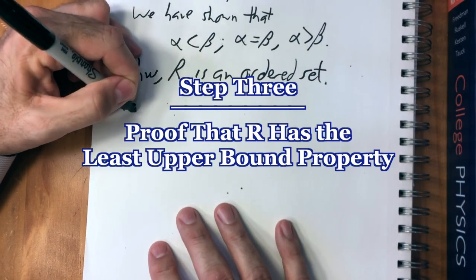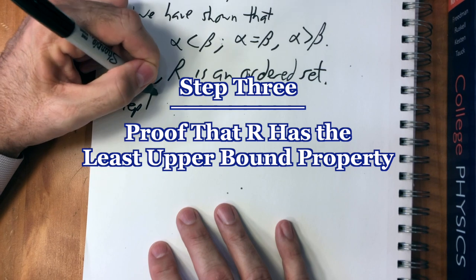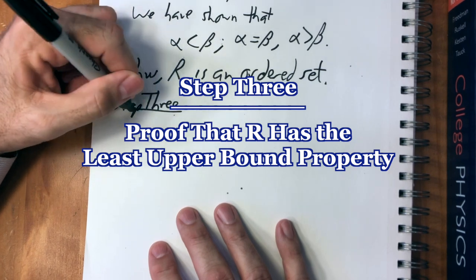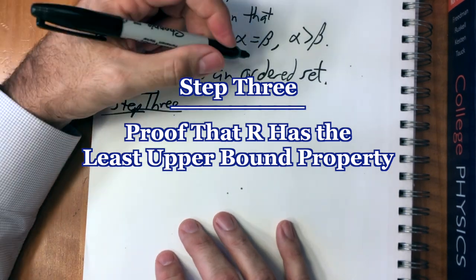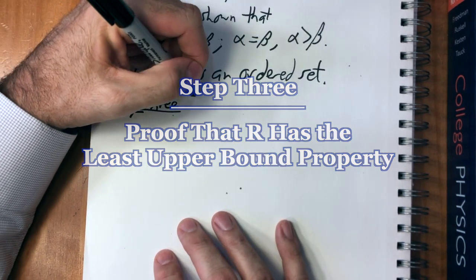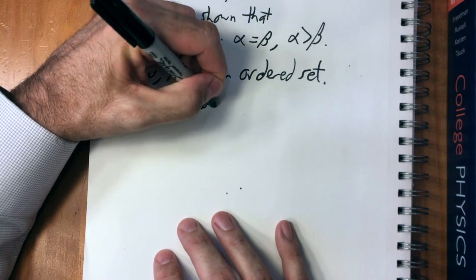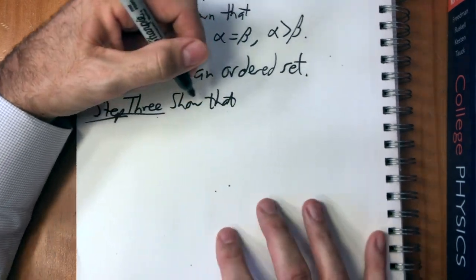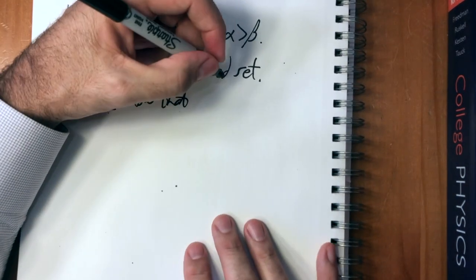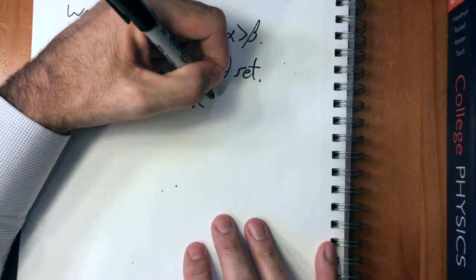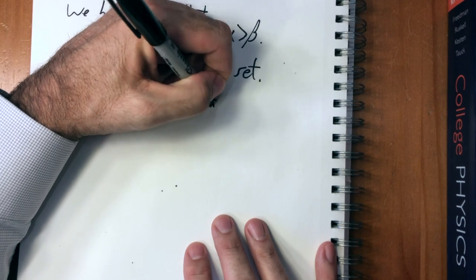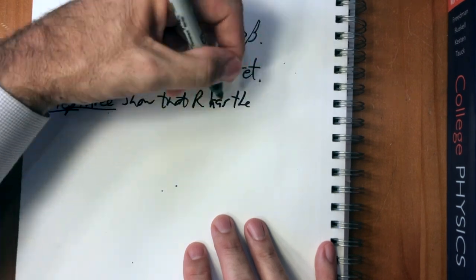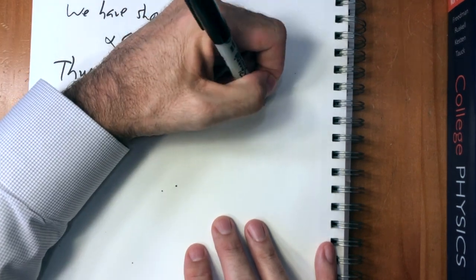Step three is to show that R has the least upper bound property.